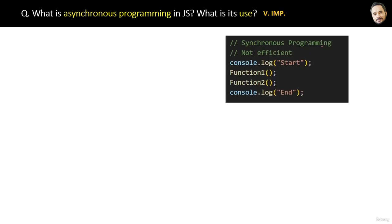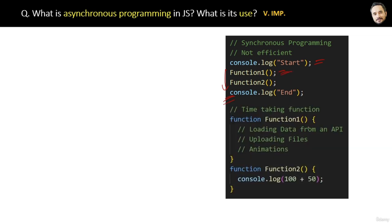In synchronous code, suppose function one is time-consuming — it will block the execution of function two until it completes. That delays the whole operation and can hang or freeze the browser. But in asynchronous programming, function one does not block function two and both can run concurrently. This is both non-blocking and faster.